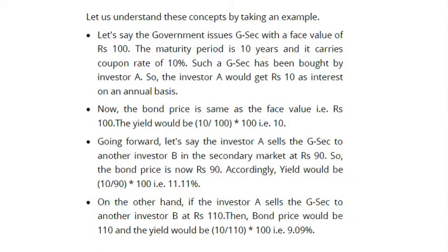For example, if the government issues a G-Sec with a face value of ₹100, maturity period of 10 years, and a coupon rate of 10%, investor A would receive ₹10 as annual interest. If the bond price equals the face value of ₹100, the yield would be (10/100) × 100 = 10%. If investor A then sells the G-Sec to investor B at ₹90 in the secondary market, the bond price becomes ₹90.